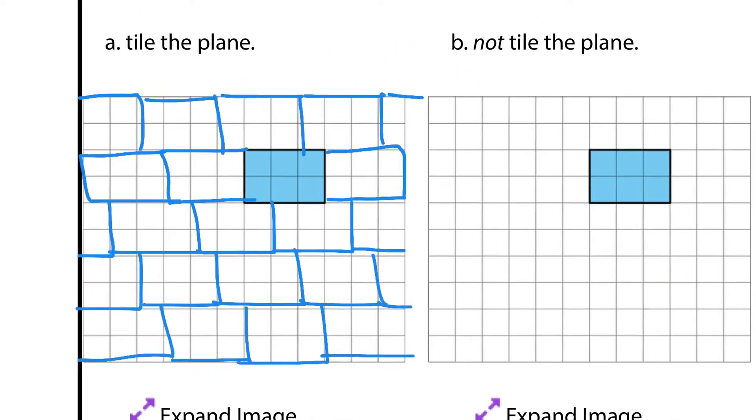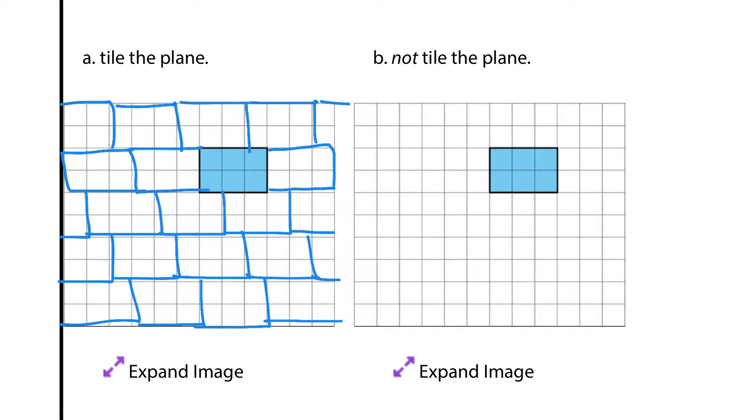Now, not tiling the plane, you don't want to fill in the entire plane. And so, with this, we could just kind of draw a 2 by 3 rectangle here, a 2 by 3 rectangle there. What else could we do? How about another 2 by 3 rectangle here, and one there, and that's it. That's not tiling the plane there.